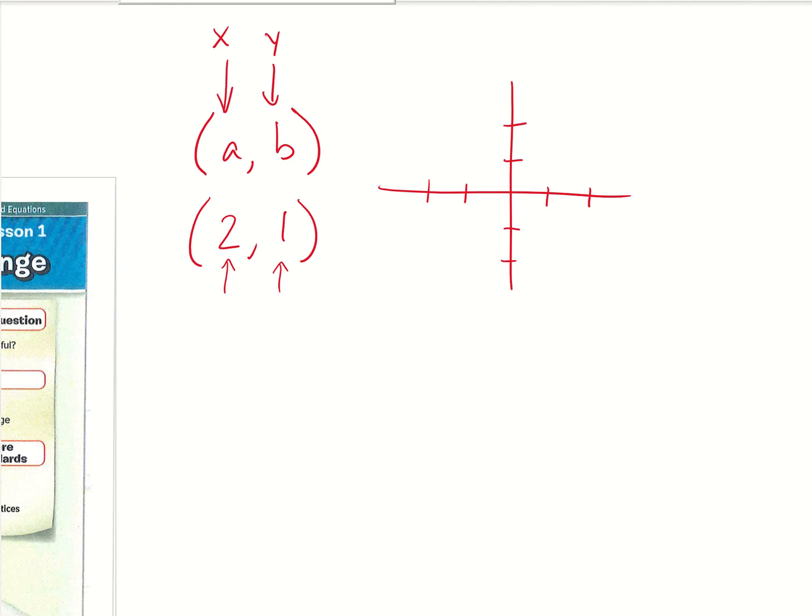For the X, you go left to right. Positive is right, negative is left. Then Y, you go up and down from that point. So you go right 2 and then up 1 for your Y value, and that is the point (2,1) right there.